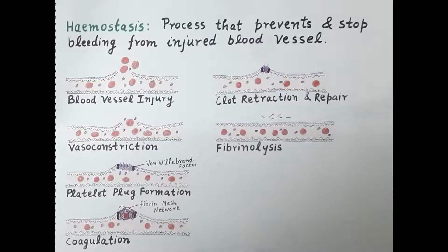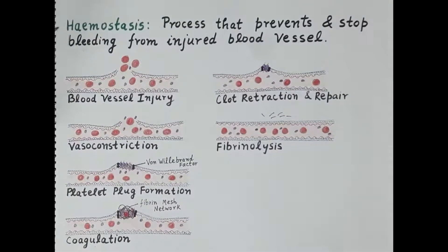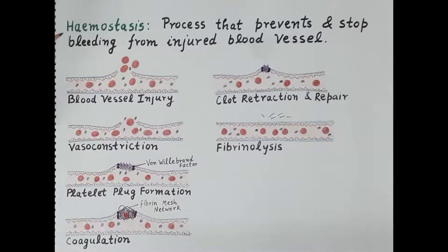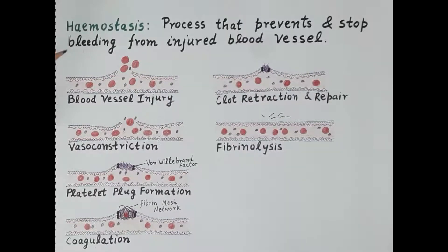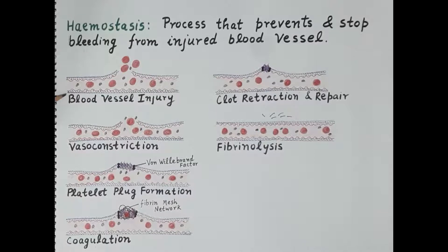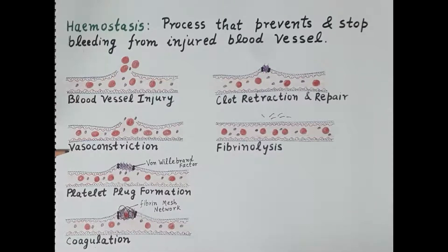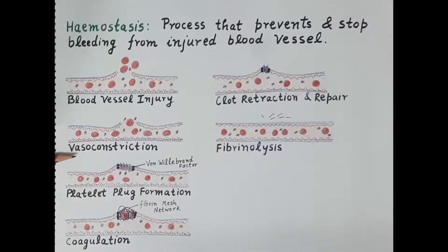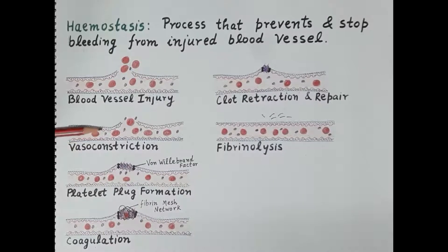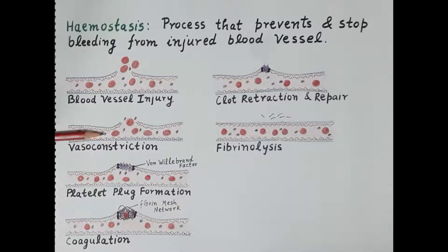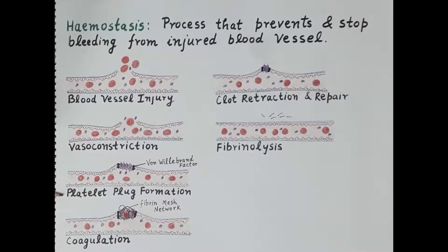Hemostasis is a process that prevents and stops bleeding from an injured blood vessel. Every step of hemostasis has been explained with the help of a diagram. If the wall of a blood vessel is injured, blood escapes into the surrounding area. The first step of hemostasis is vasoconstriction — as soon as the blood vessel wall is injured, vasoconstriction occurs, reducing and narrowing the lumen of the blood vessel, thereby reducing blood loss.